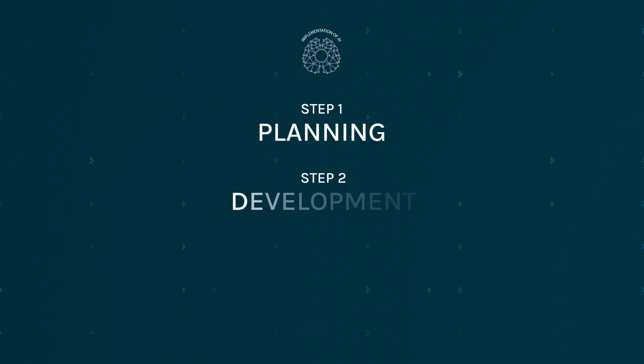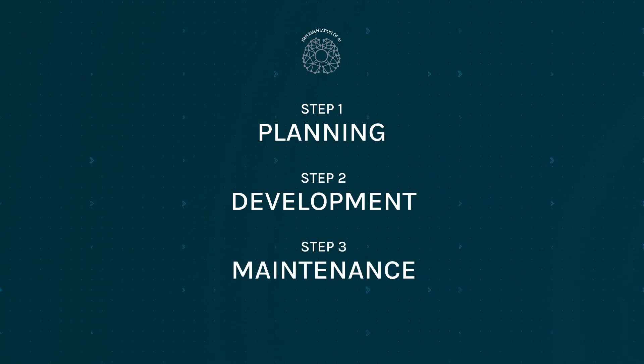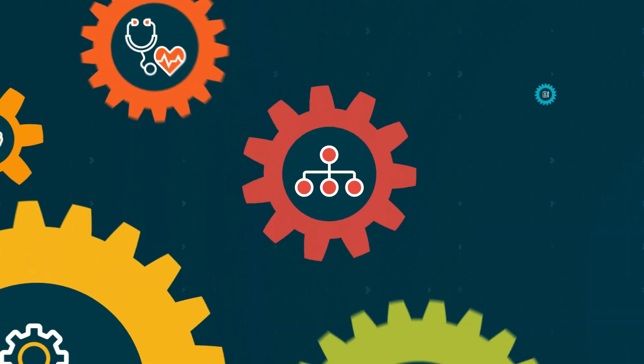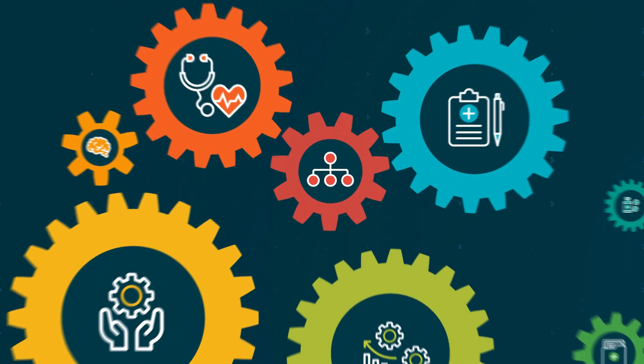They summarised the findings and defined a three-step framework for AI implementation. All the steps are interconnected to their components — they work like a mechanism with many gears working together. Each gear is important for the whole mechanism to work.